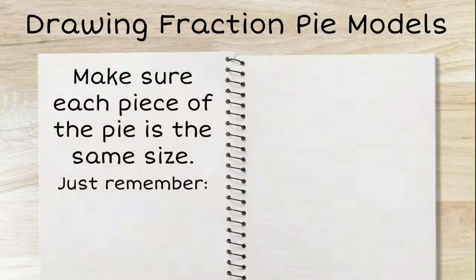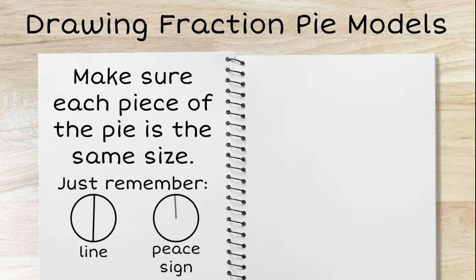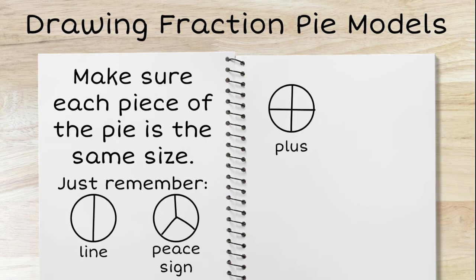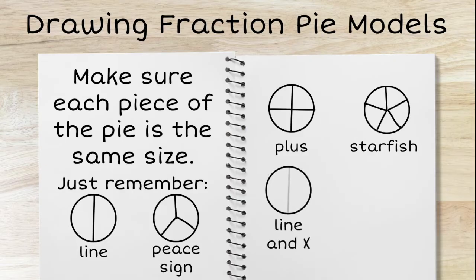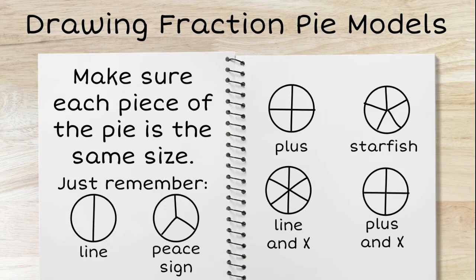When drawing fraction pie models, make sure that each piece of the pie is the same size. Halves are just a line. Thirds are kind of like a peace sign without the bottom middle part. Fourths is like a plus sign in the middle of the circle. To draw fifths, it's kind of like a starfish shape. To draw sixths, it's like a line and then an X on top. Drawing eighths is like a plus sign with an X on top.